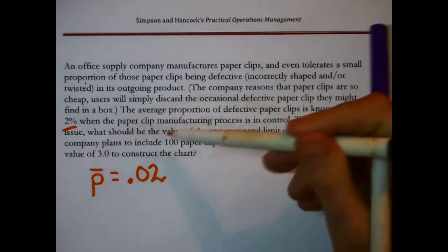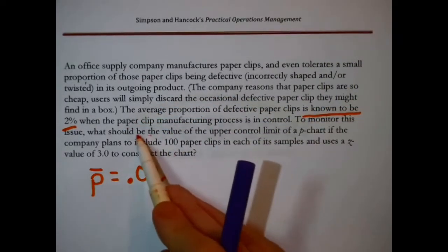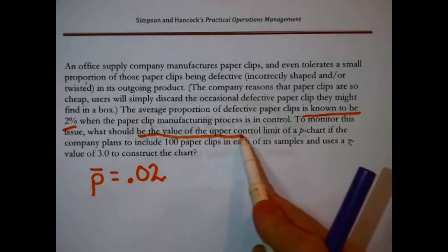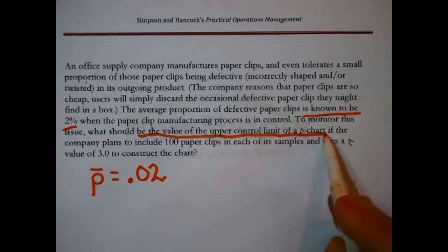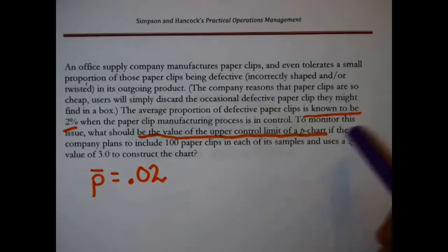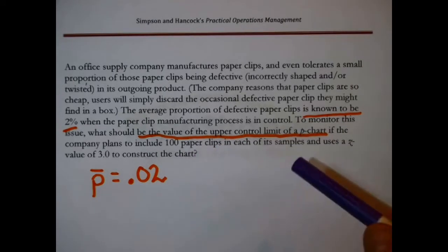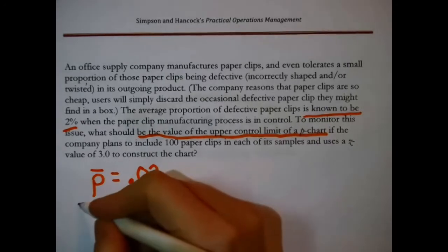What should be the value of the upper control limit of a P-chart if the company plans to include 100 paper clips in each sample and uses a Z-value of 3.0 to construct that chart? We just need a formula.